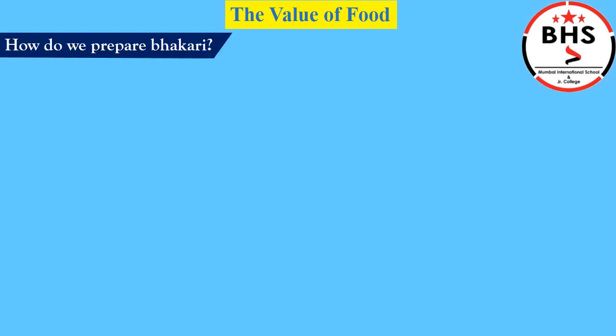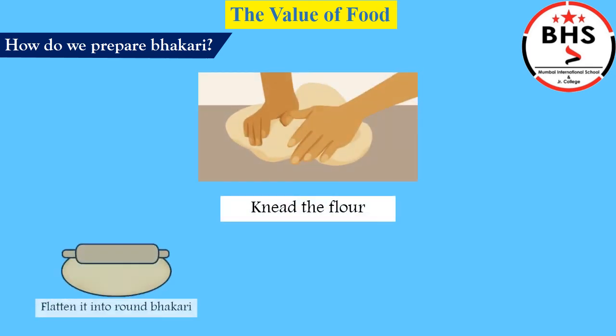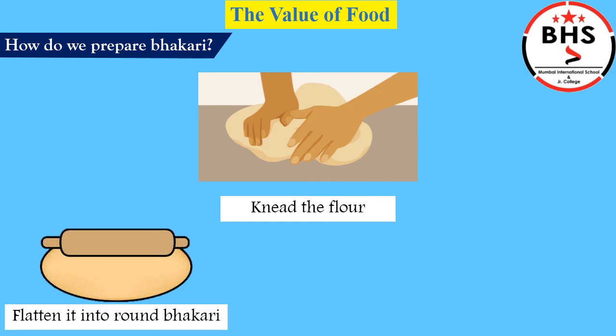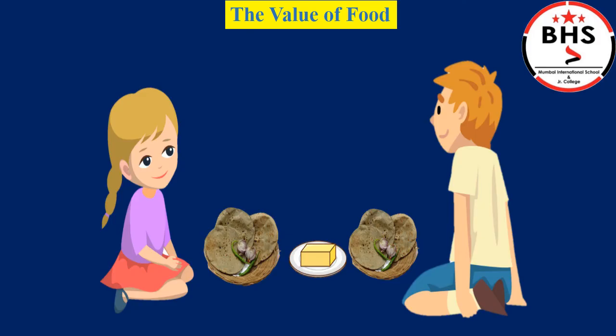How do we prepare bhakri? First, the flour is kneaded into a dough. Then the dough is flattened into a round bhakri. And then it is roasted. To roast the bhakri, we burn fuel — gas or wood. And this is how Arjun and Varsha get their bhakri.